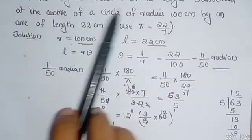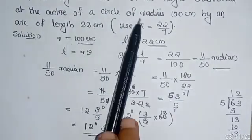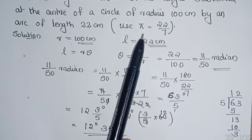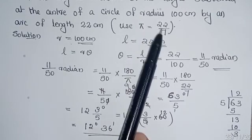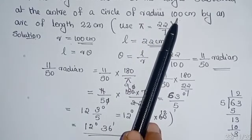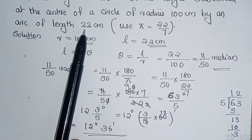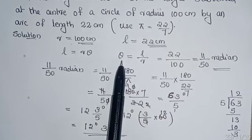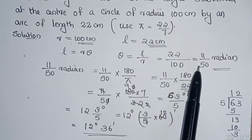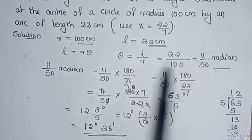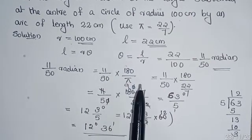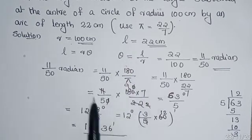Once again: find the degree measure of the angle subtended at the center of a circle of radius 100 centimeters by an arc of length 22 centimeters, with π = 22/7. Here R = 100 and L = 22 centimeters. Using L = Rθ, theta equals 22/100 = 11/50 radians. Converting to degrees by multiplying by 180/π and substituting the value of π, we get 12 degrees 36 minutes.